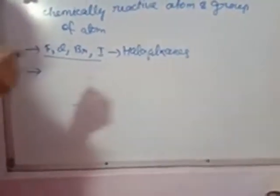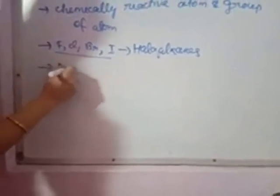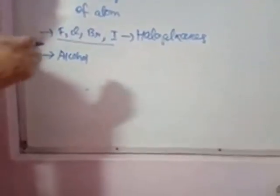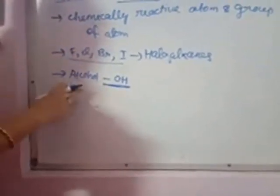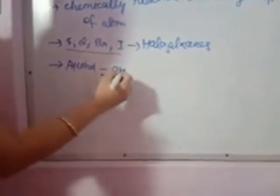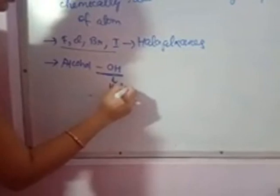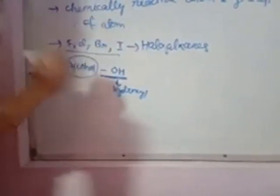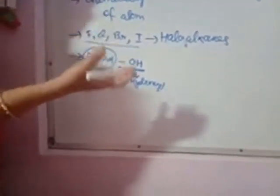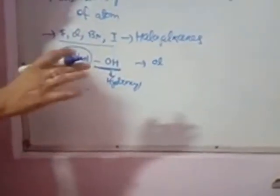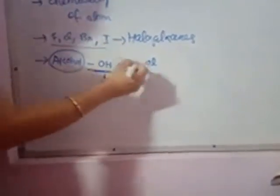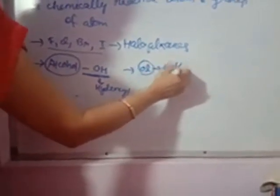Another functional group is the alcohol group. If in the organic compound the OH group is present, this is the representation of that group. It is known as the hydroxyl group, and the organic compounds with this functional group are known as alcohols. Whenever you are representing such a compound, the suffix you have to put at last is -OL, like methanol, ethanol, propanol. The suffix is -OL.